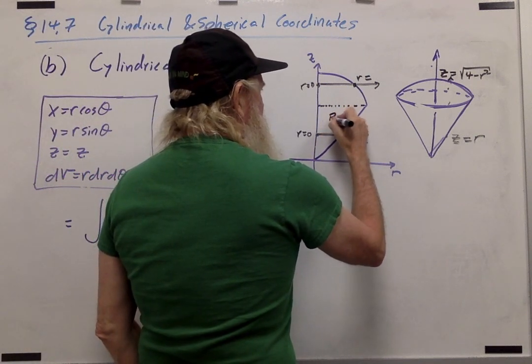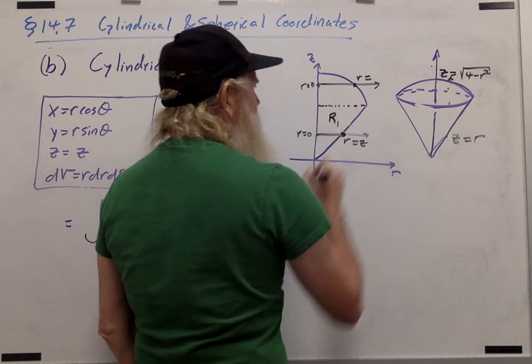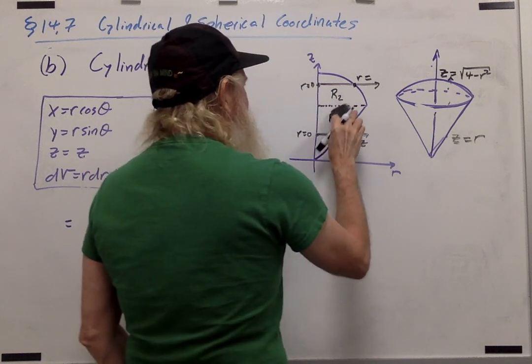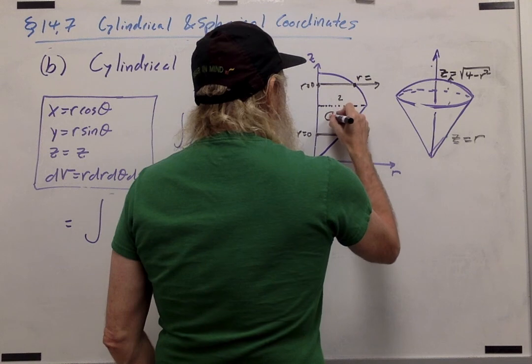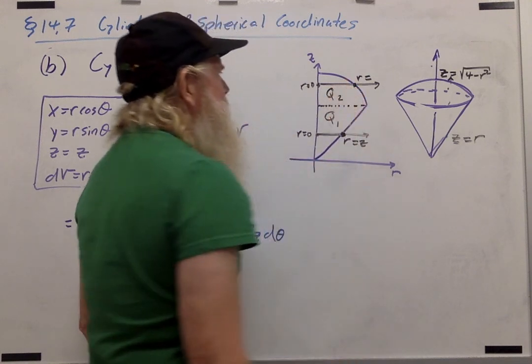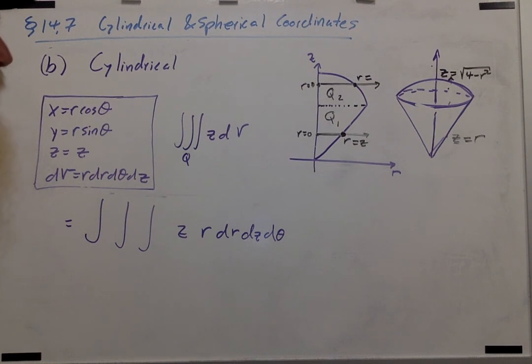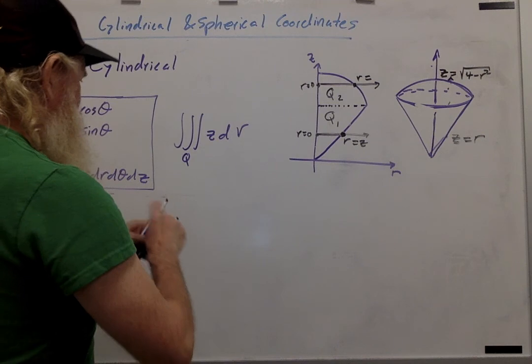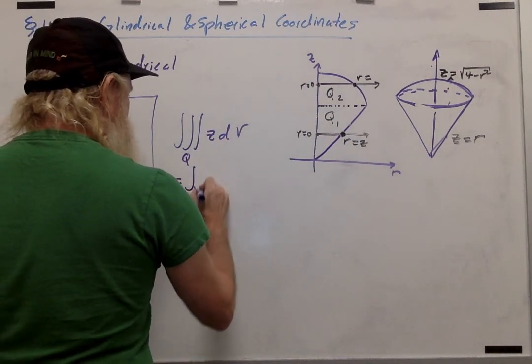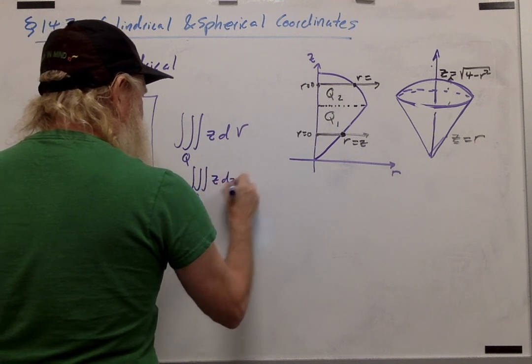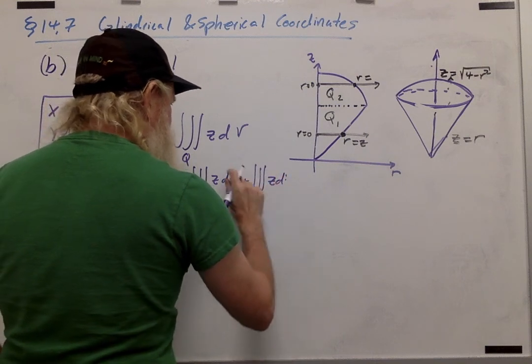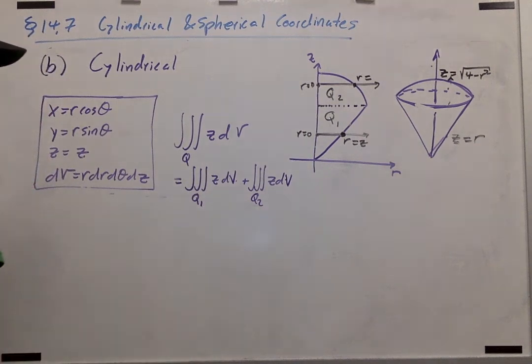I'd have to find the integral over this region one down here plus the region up there. Since I'm talking solids, let me use the letter Q instead of R. So I'd have the integral over solid Q1 plus the integral over solid Q2. This integral would be the triple integral over Q1 of z dV plus the triple integral over Q2 of z dV. And let's just set up each one of these integrals separately.